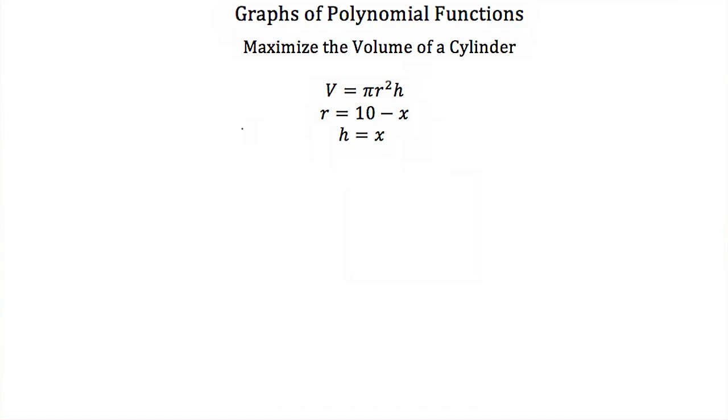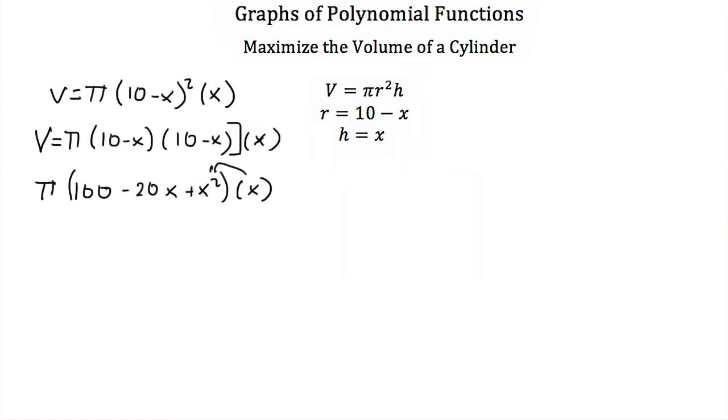Well if we plug that in for r and h we'll get our volume is equal to π times (10 - x)² and then times x again. So this is the same as volume is equal to π times (10 - x) times (10 - x) again and then times x because this is just our square. Now if I multiply this out, I'm going to take these first two terms. We'll get 100 minus 20x plus x². This is all still multiplied by π and still multiplied by x. Now if I carry my x into the parentheses, I'll end up with π times x³ minus 20x² plus 100x.